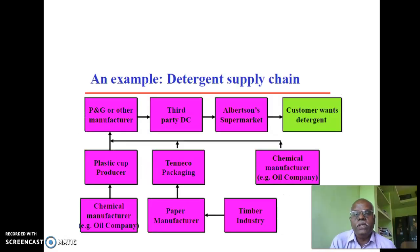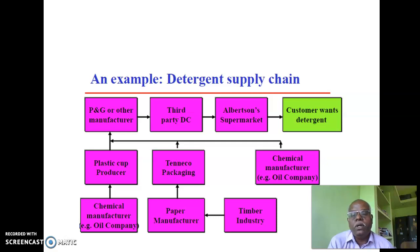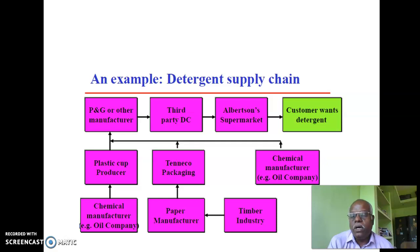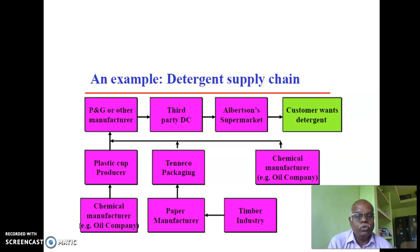Let us take the example of a detergent supply chain — suppose we take Procter & Gamble, a company which produces soaps and detergents. Various suppliers like a packaging industry and paper manufacturers supply packaging materials, and a chemical manufacturer supplies raw materials used for manufacturing detergent or soap. After manufacturing, the product goes to distributors, from the distributors it goes to the supermarket, and finally from the supermarket it reaches the customer.